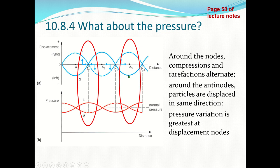If the displacement is maximum negative, then all the particles around the antinodes are displaced in the negative direction, so the distance between the particles is basically constant. We find therefore that the pressure variation is actually greatest at the displacement nodes.